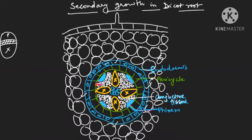In dicot root, they will make cambium below phloem. Who is helping in making it below phloem? The conjunctive tissue is going for de-differentiation to form a part of vascular cambium. So first of all, below the phloem, conjunctive tissue goes for de-differentiation to form a part of vascular cambium. Check the board diagram carefully — then only this topic will be very easy for you.